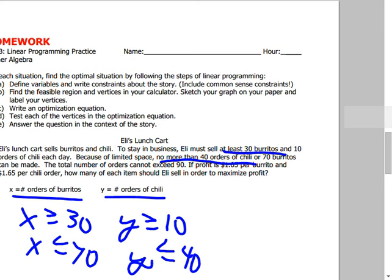We already said x ≥ 30, so we don't need to add x ≥ 0 separately — that's already covered. Then the total order cannot exceed 90: x + y ≤ 90. If you graph all those constraints, they'll make a feasible region. Insert a sticky note graph and plot them all.